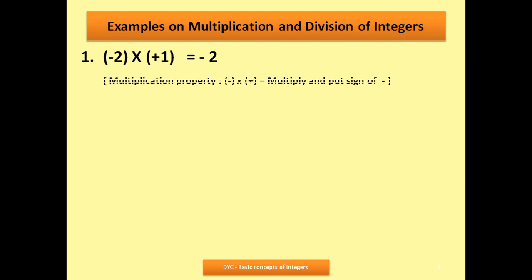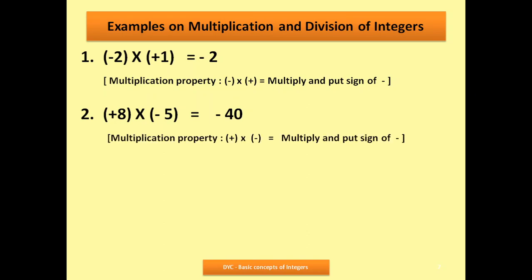Multiplication property: one is minus multiplied by positive — you multiply and put the sign of negative. Another example: 8 multiplied by minus 5. 8 fives are 40. One is plus, one is minus, so my answer is minus 40. Multiplication property: multiply and put the sign of minus.